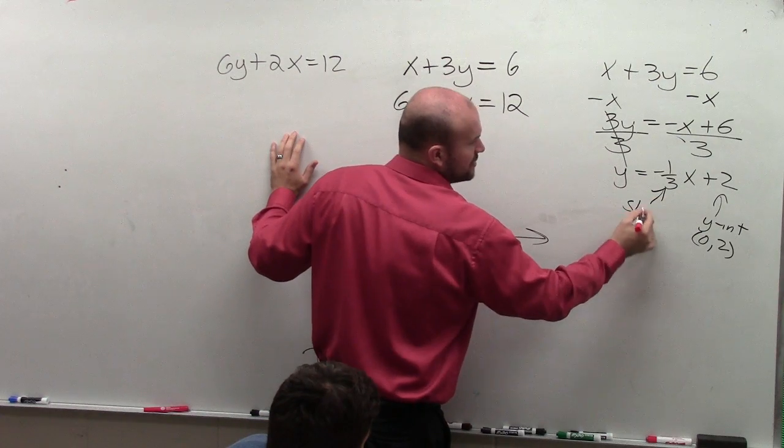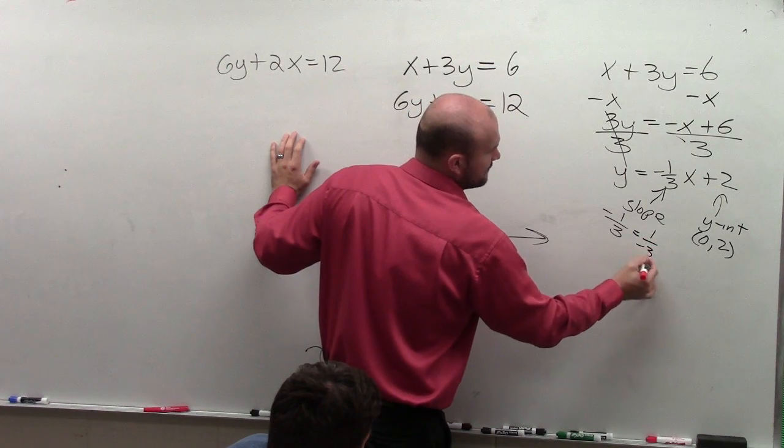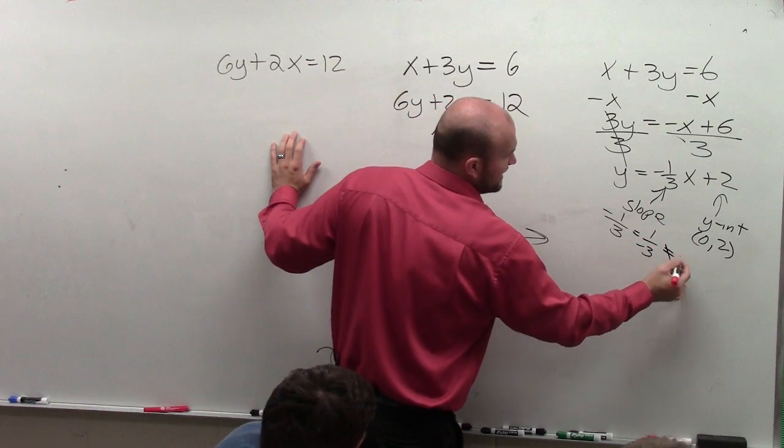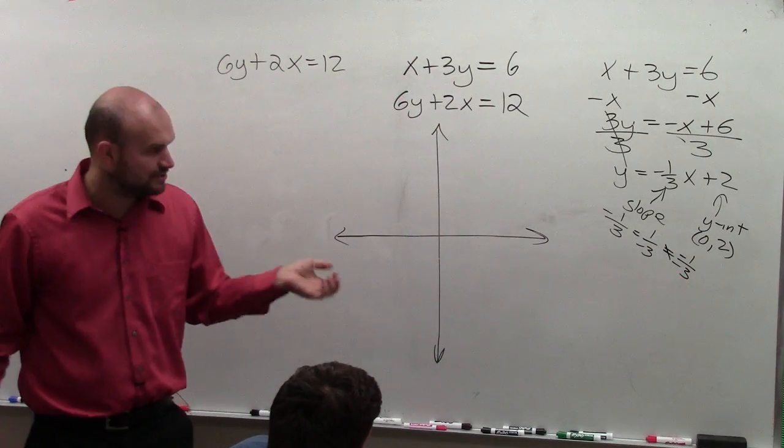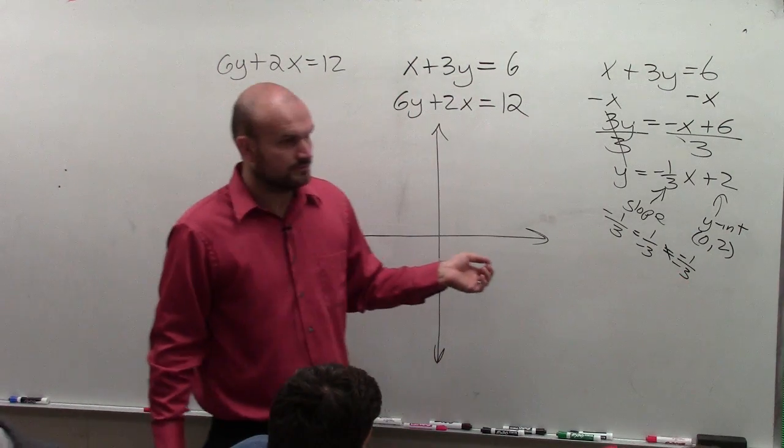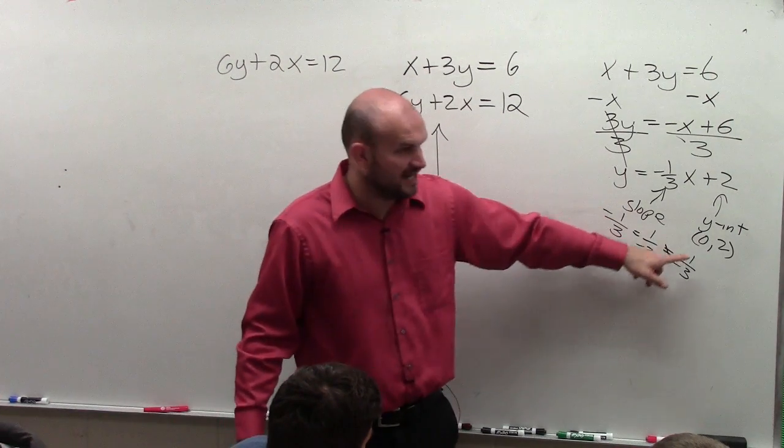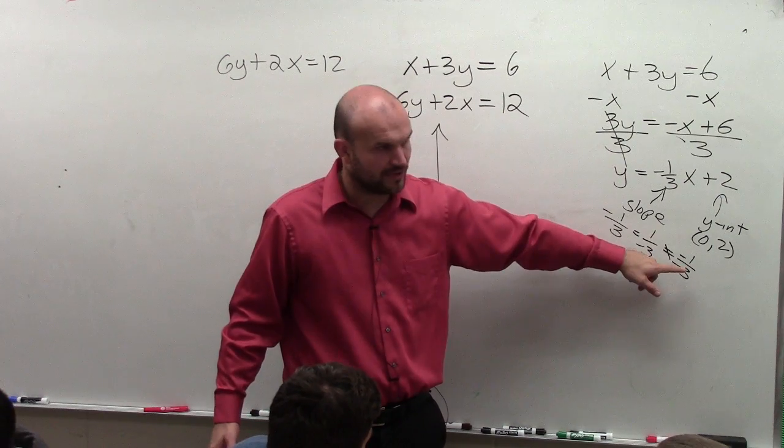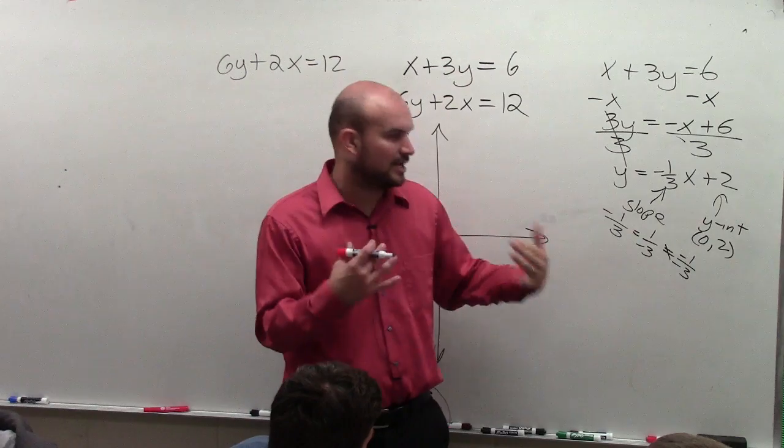Please remember, guys, when you have a negative slope, that can be negative 1 over 3, which could be equal to 1 over negative 3. But it does not equal negative 1 over negative 3. Do not make that mistake. A lot of students make the mistake. Well, this is still negative. That's negative 1 third. Negative divided by negative makes it positive 1 third. So you can only have the negative in the numerator or denominator when you're calculating slope.